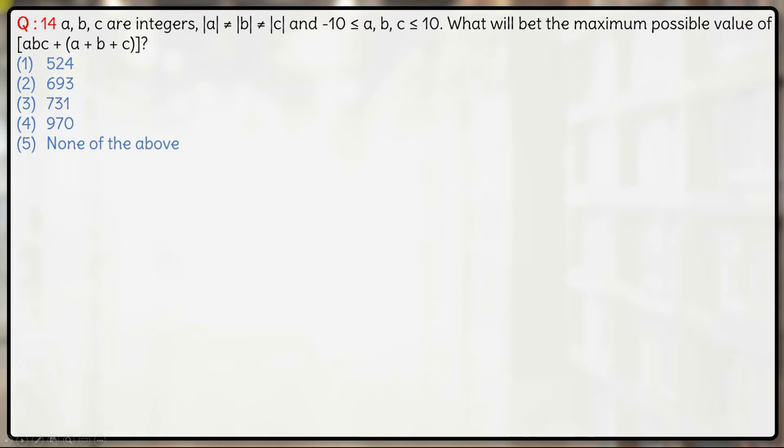What will be the maximum possible value of ABC? This should be actually minus over here. ABC minus of A plus B plus C. The correct question is ABC minus A plus B plus C.